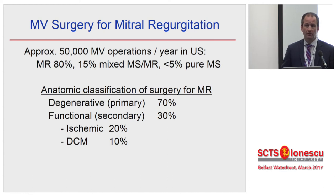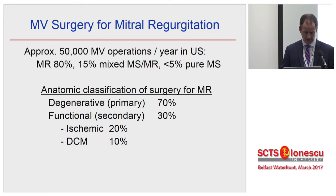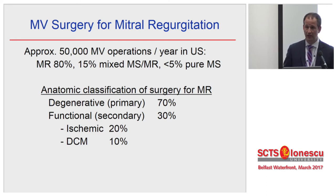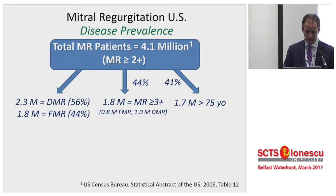Approximately 50,000 mitral valve operations are performed per year in the United States. Mitral regurgitation accounts for 80% of those, of which 70% are degenerative and 30% are functional — 20% ischemic and 10% dilated cardiomyopathy. When you look at the raw numbers, we're actually treating a very small number of patients with functional mitral regurgitation.